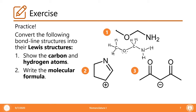To complete the octet rule of oxygen, we count up to eight electrons — so we have two lone pairs. For nitrogen, we similarly complete its octet. Let's write the molecular formula: we have two carbons (C2), one nitrogen (N), one oxygen (O), and seven hydrogens (H7).